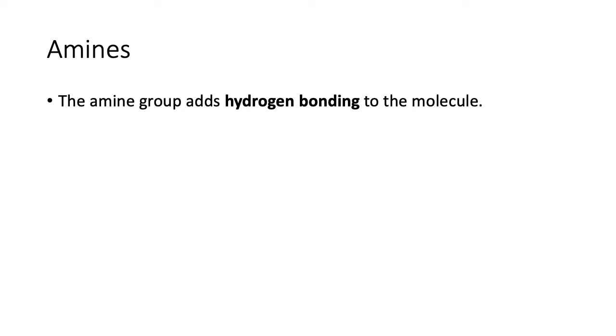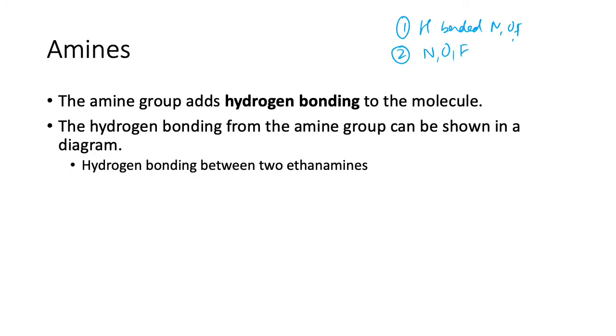The amine group adds hydrogen bonding to the molecule. So remember the two requirements of hydrogen bonding: one is H bonded to an N, O, or F, and number two is that you need an N, O, or F. And so amines fulfill both of these because when they have the NH2 group, they have the H bonded to N, O, or F and they have the N as well.